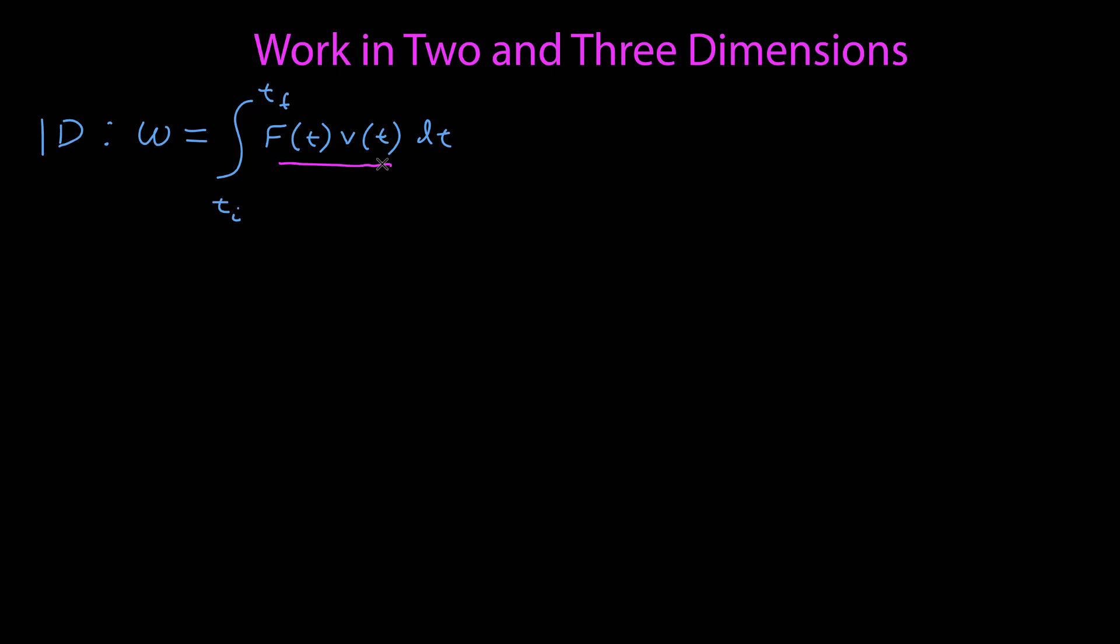Well, now that we're in two dimensions and three, we can do this correctly. So we define the work, in fact, as a time integral, but now we have the dot product of these two vectors. And now that works because we know the dot product gives us a scalar quantity which can be integrated to give us the work which is also a scalar.